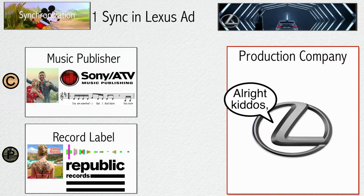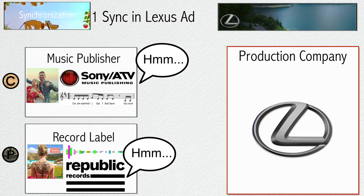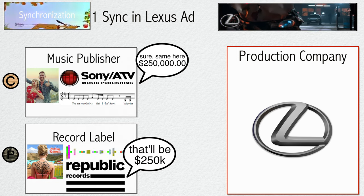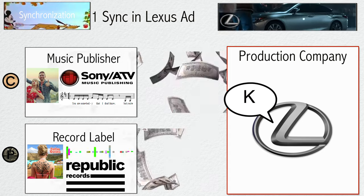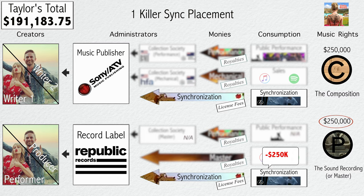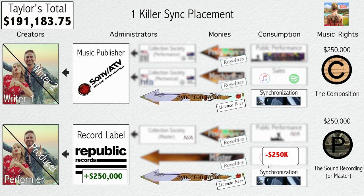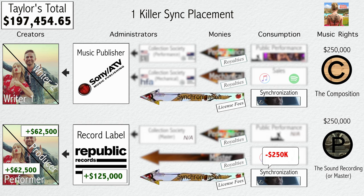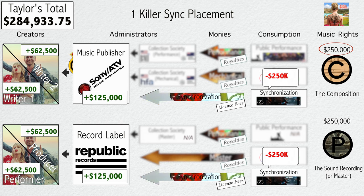The Lexus ad production company agrees with the song's publisher, Sony ATV, and label Republic to pay $250,000 each to use 40 seconds of the song in the ad for the next 5 years, effective worldwide. $250,000 for the use of the masters flows directly from Lexus to the label, who keeps half and splits the remainder per the agreement with the artists. The same exact process happens with the publishing share.